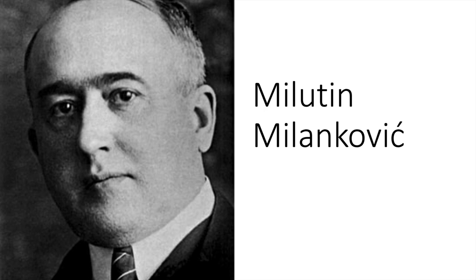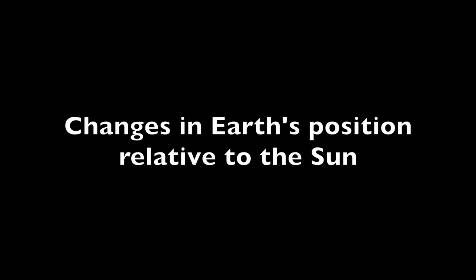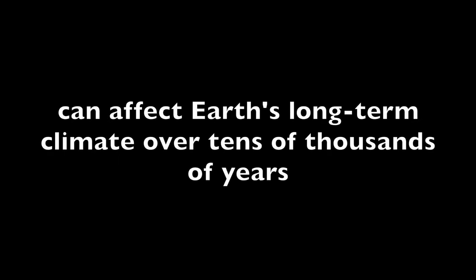About a century ago, a Serbian scientist named Milutin Milankovic proposed that changes in Earth's position relative to the sun can affect Earth's long-term climate over tens of thousands of years. We call these changes Milankovic cycles, and there are three main ones you need to know about.